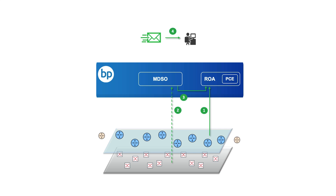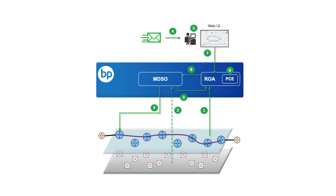Next, engineering receives a request for a tunnel with certain capacity and constraints from PEA to PEZ — for example, for a new VPN service or to build out infrastructure for an IP communications service relying on MPLS tunnels, such as from the edge to a cloud resource. The engineer uses the Blue Planet web UI to request ROA to calculate a path for a TE tunnel with certain constraints, which could include shared risk-link groups. ROA calculates the label switch paths, the engineer reviews and submits a provisioning request, ROA sends the LSP request to MDSO, and MDSO provisions those LSPs using RSVP-TE or segment routing end to end.